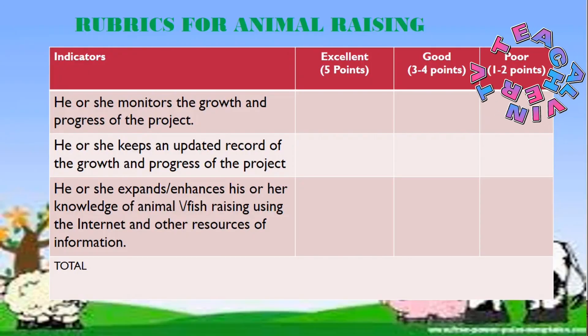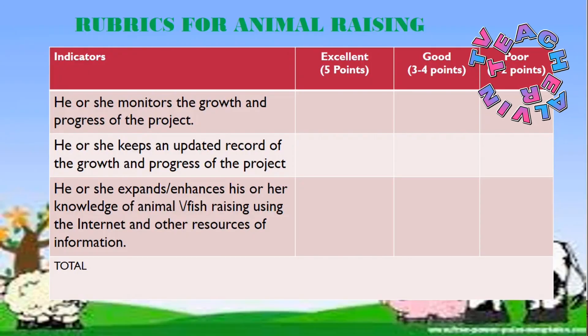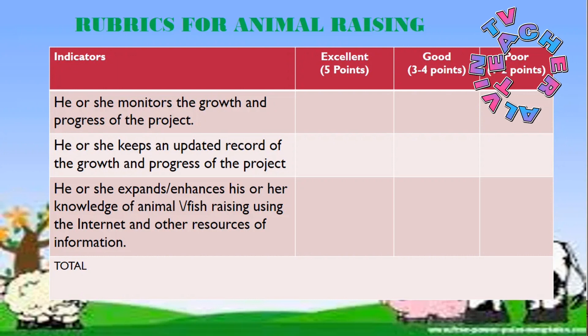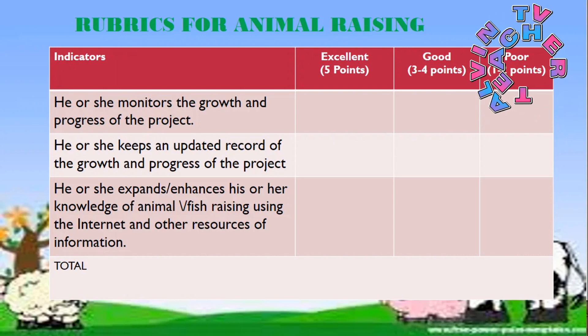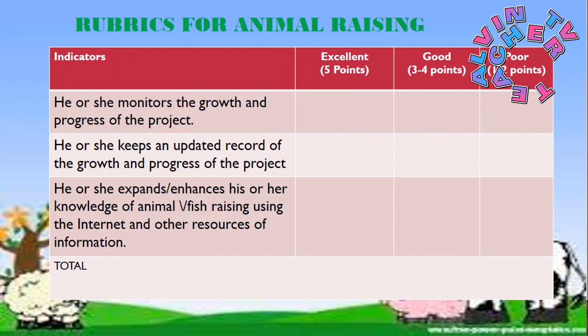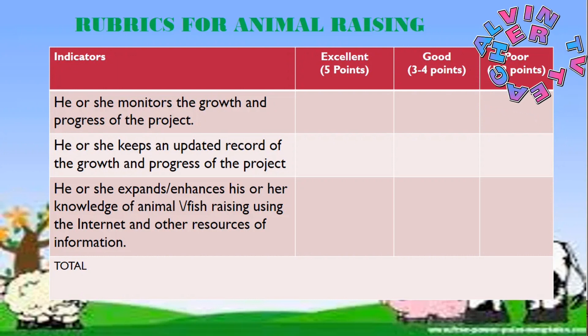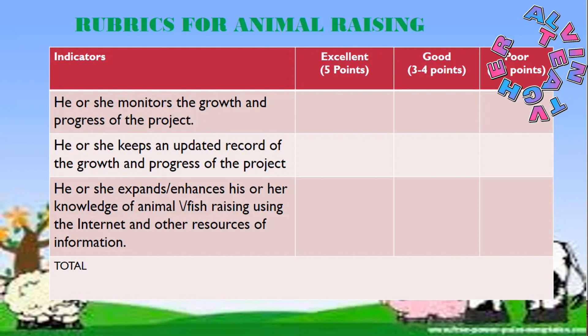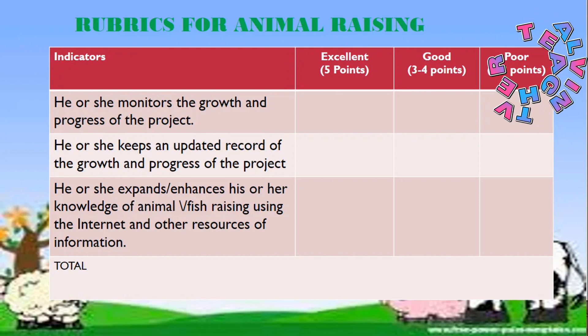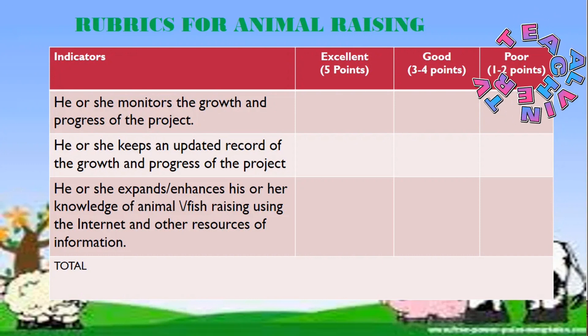Rubrics for animal raising: 5 points for excellent, 3 to 4 points for good, and 1 to 2 points for poor.